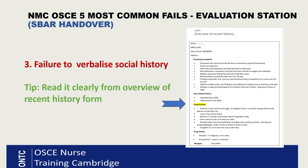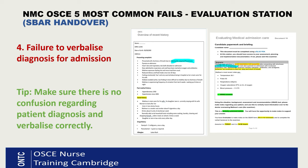Common fail number three: failure to verbalize social history. This is also a very common fail in this station. Social history comes under the background part of your handover. The tip is to read it from your overview of patient history form — I've highlighted it on screen. This form tells you about the patient's social history, which you read during the admission and assessment station. You need to use that document again and read the whole social history. Don't think it's not relevant — anything about the patient's background is relevant.